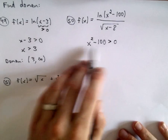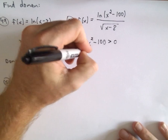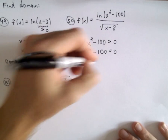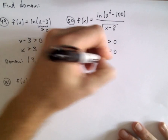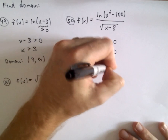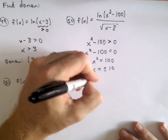And recall we said to solve quadratic inequalities, turn it into an equation. Solve the equation. So I'm going to make this x squared equals 100. And if I take the square root of both sides, I'll get x equals positive and negative 10.